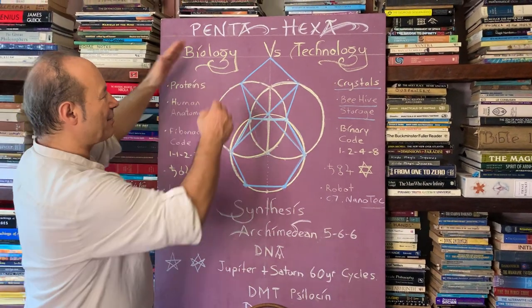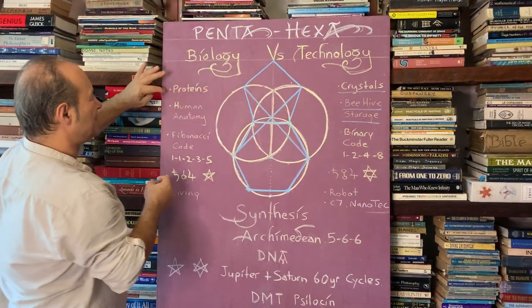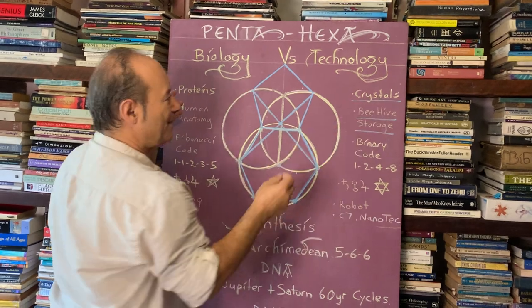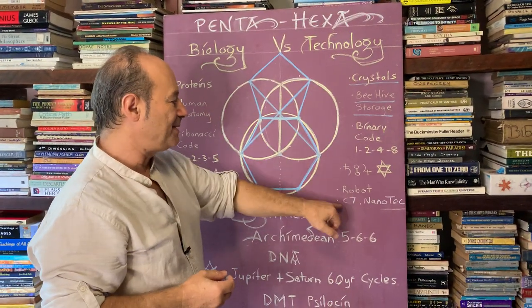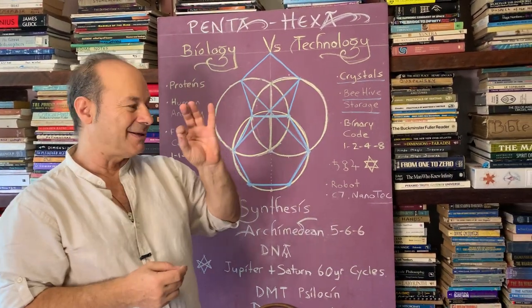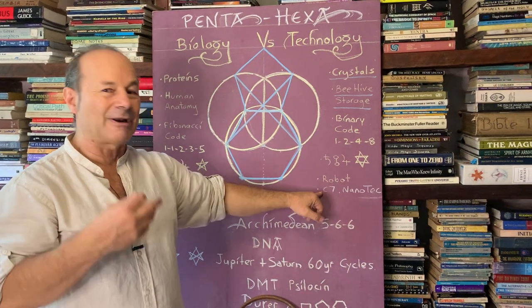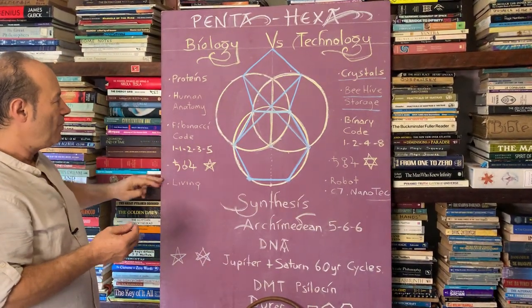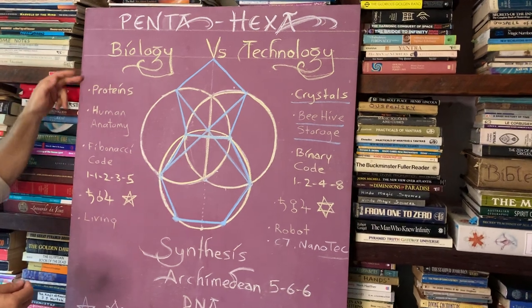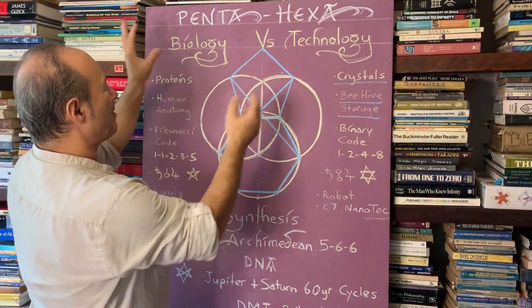We're going to start off with this polarity of biology versus technology. I believe the five is the shape of all living proteins in the body, whereas the six — crystals are hexagonal. The hexagonal structure of carbon, graphene, is like a chicken-wire lattice one atom thin, creating nanotech that allows us to go into the space age. We need the six to develop technology, but what's important is how we align that technology with pure thought and intent.